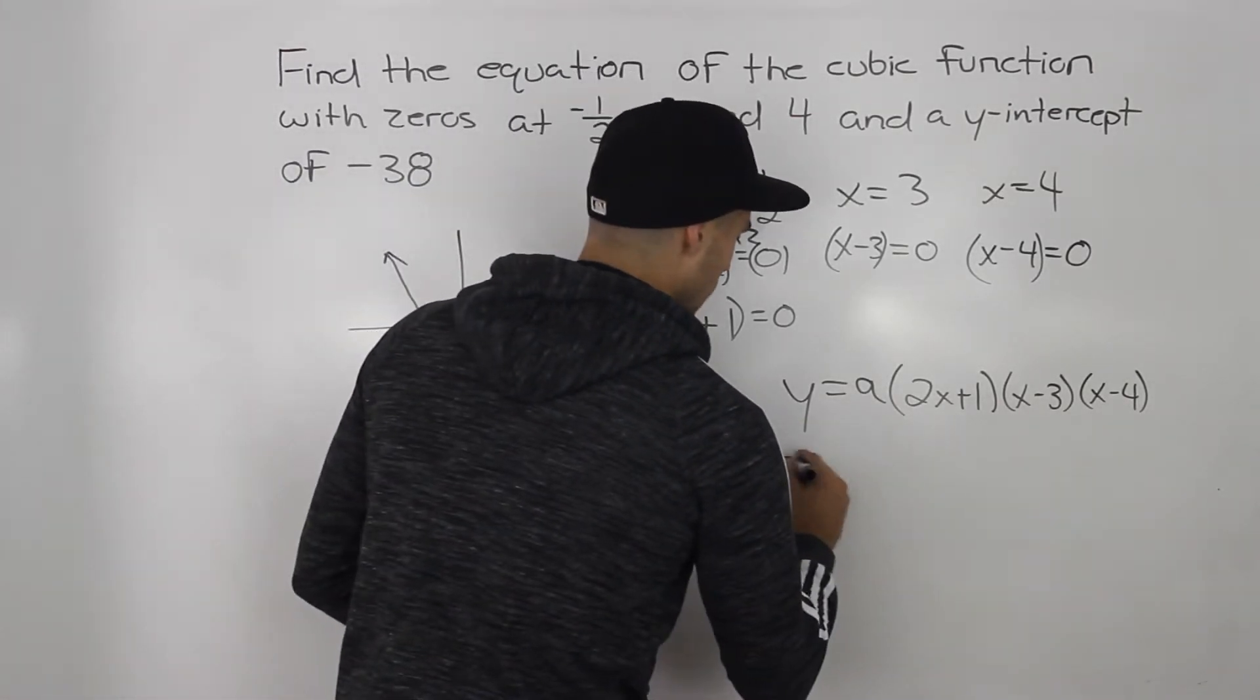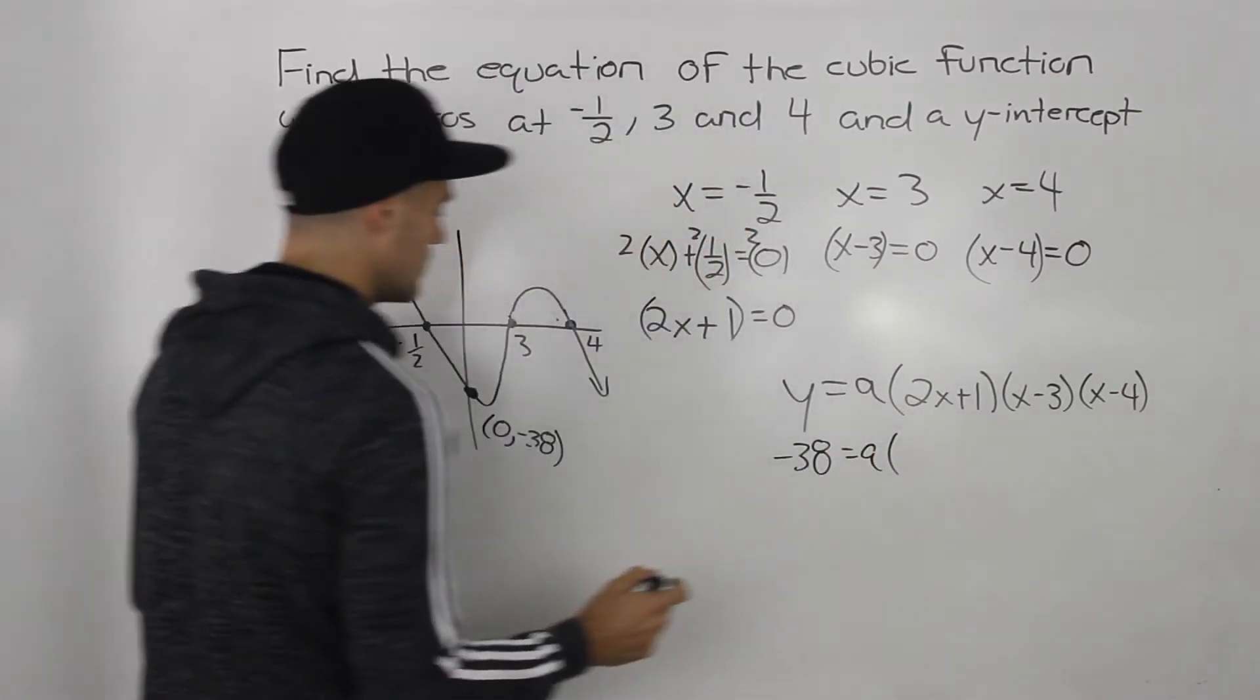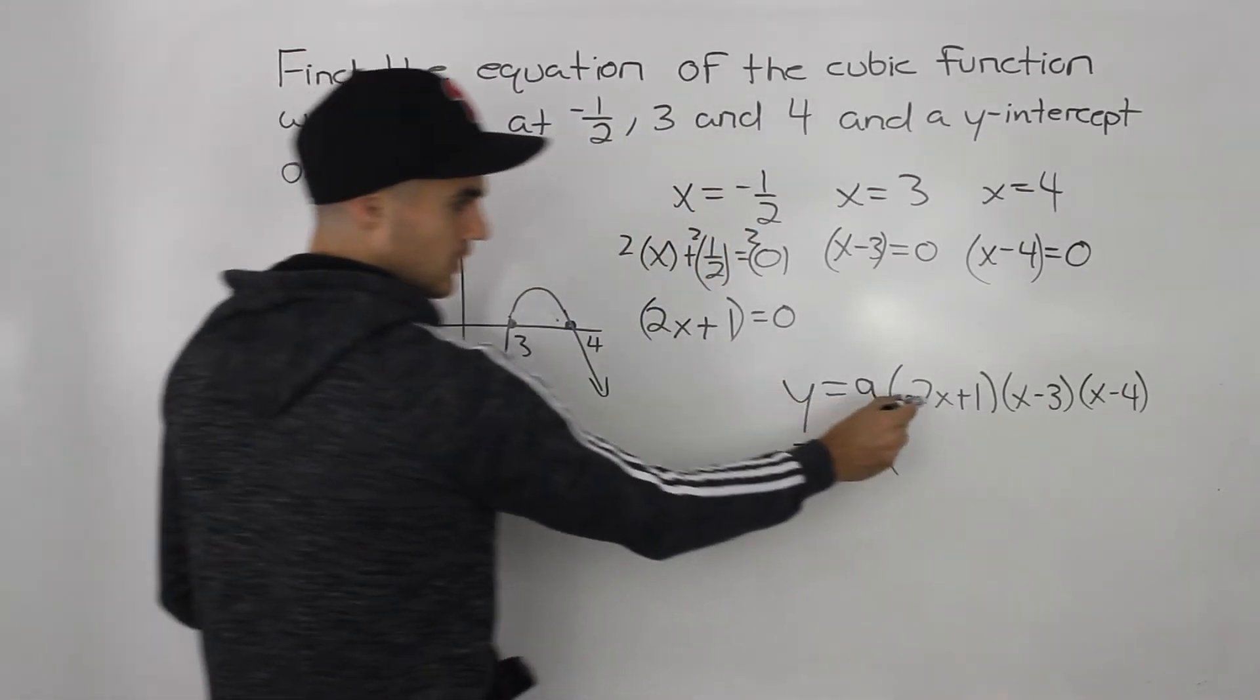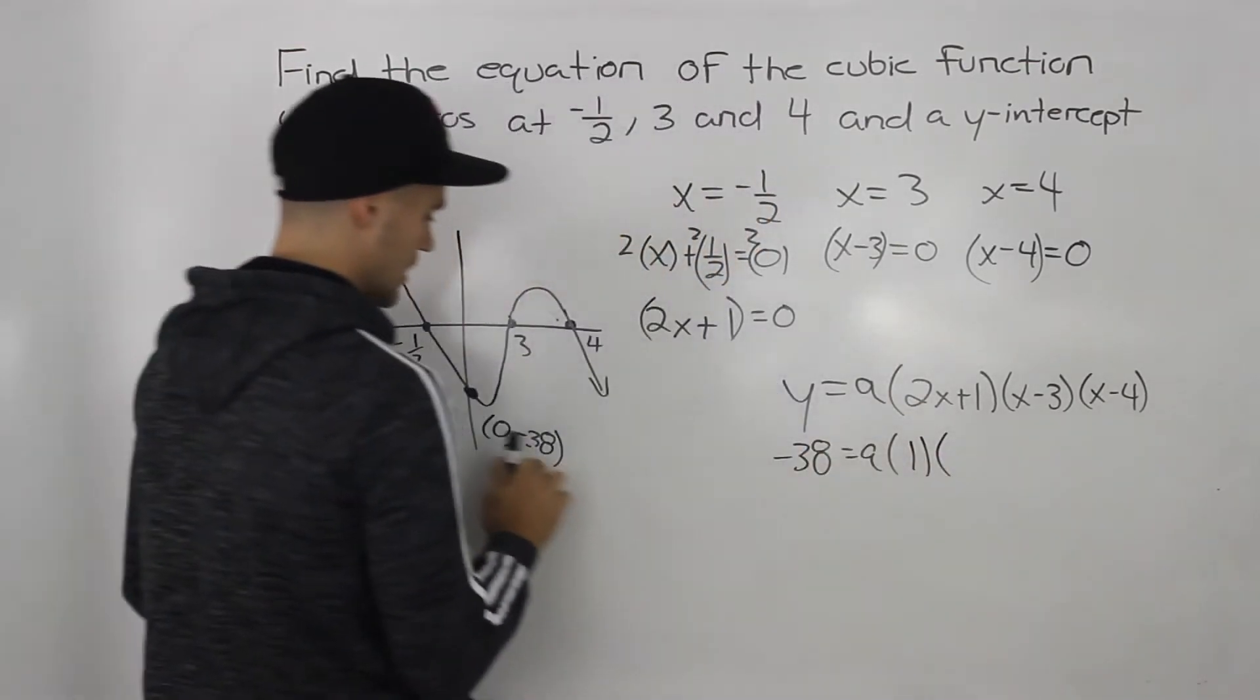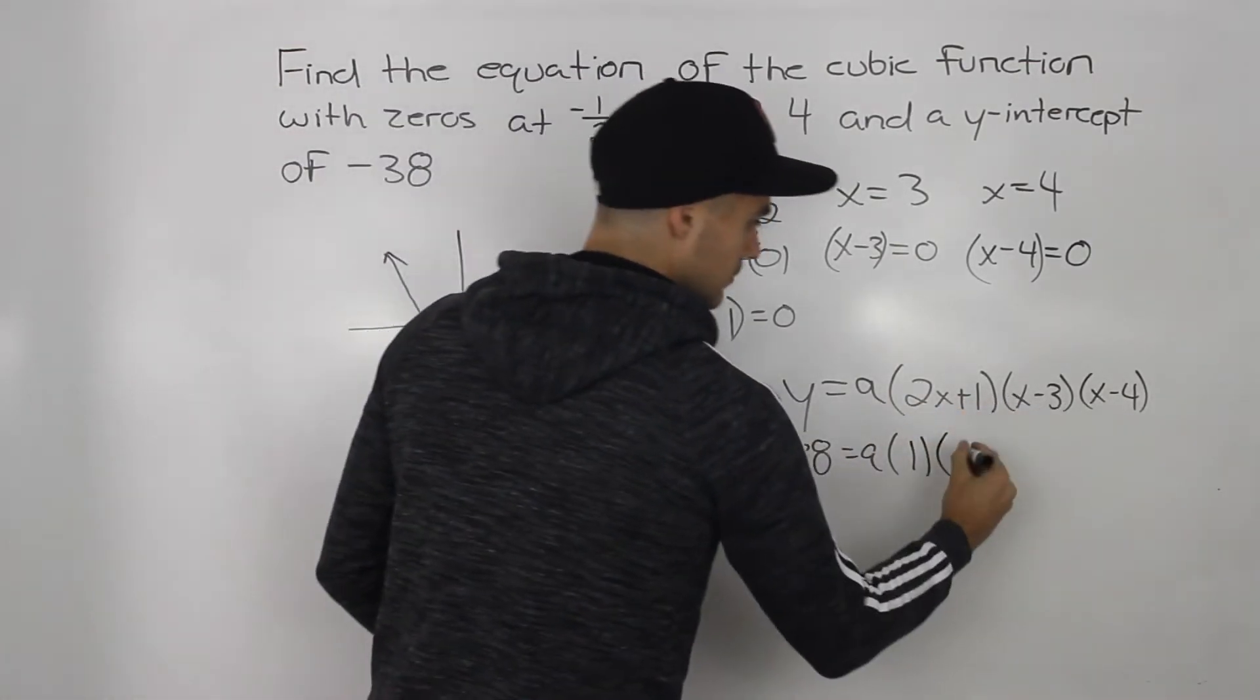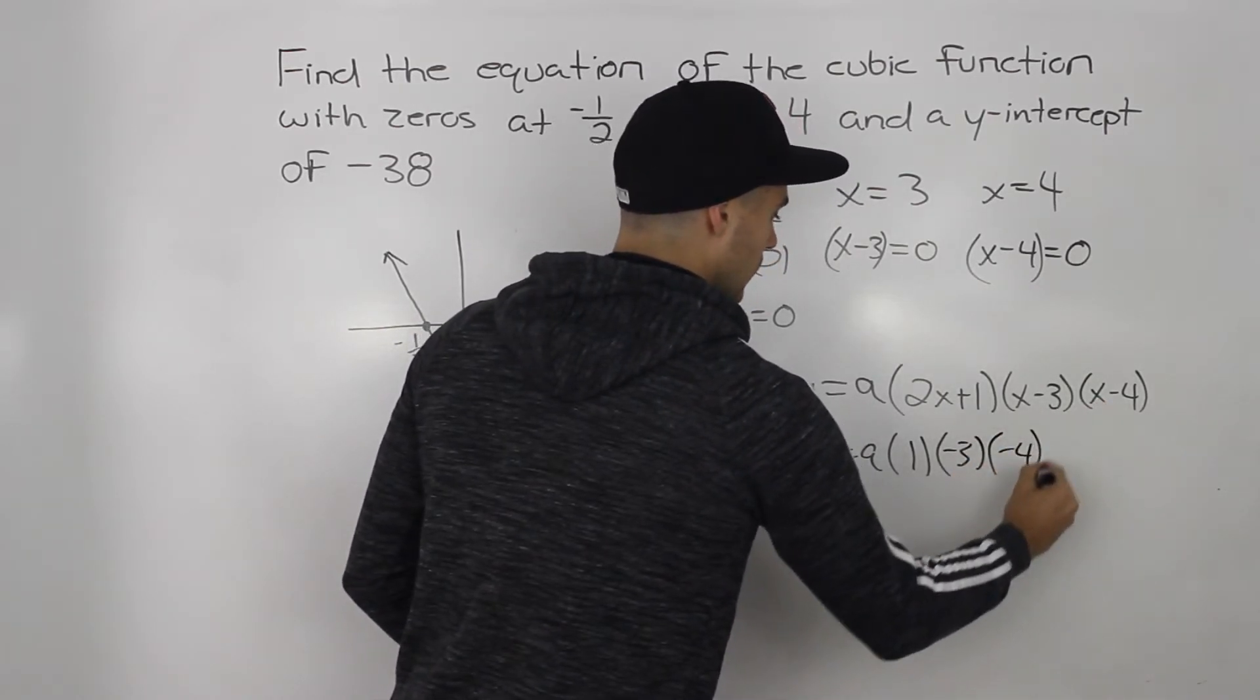All right, so the y value would be negative 38, a value we're solving for. Two times zero is zero, plus one would give us one. Zero minus three would give us negative three, and then zero minus four would give us negative four.